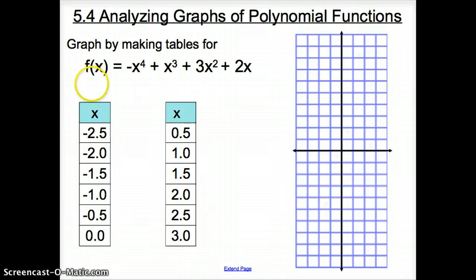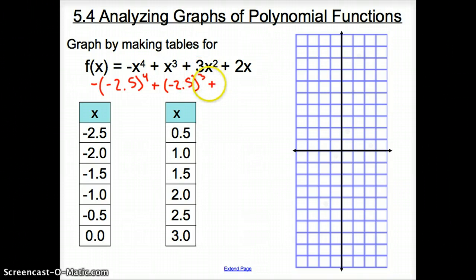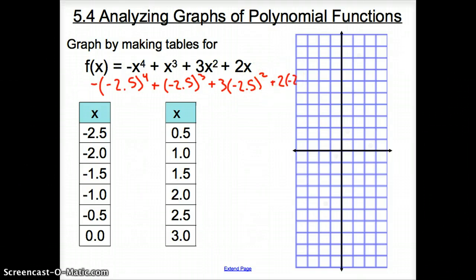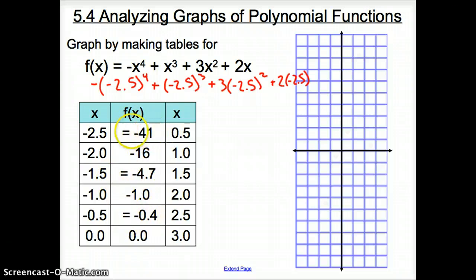So here we have a negative from our function. I'm going to put everything I plug in for x in parentheses. It's going to be negative 2.5 to the fourth, plus negative 2.5 to the third, plus 3 times negative 2.5 squared, plus 2 times negative 2.5. When you plug this all into your calculator, we should get a value right around negative 41. Negative 16, negative 1, and 0 are all exact numbers.